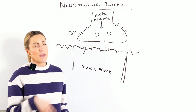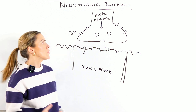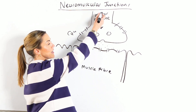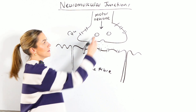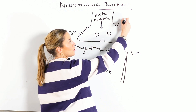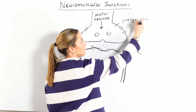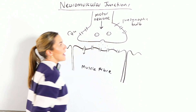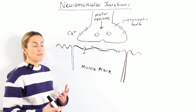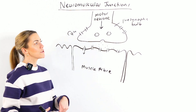So let's go from the beginning and explain it as far as we can. In the motor neuron, an action potential is going to arrive in what we call the presynaptic bulb — basically the end, or the presynaptic terminal, of the motor neuron.